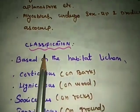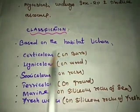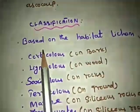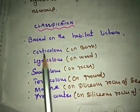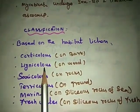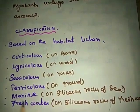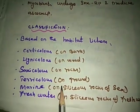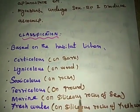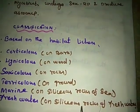Based on habitat, lichens are classified into the following types: corticolous — fungi grow on bark; lignicolous — fungi grow on wood; saxicolous — fungi grow on rock; terricolous — fungi grow on ground; marine — fungi grow on siliceous rock of the sea; and freshwater — fungi grow on siliceous rock of fresh water.